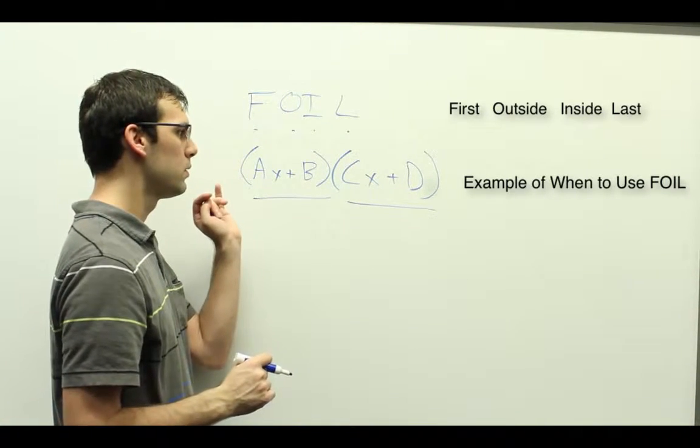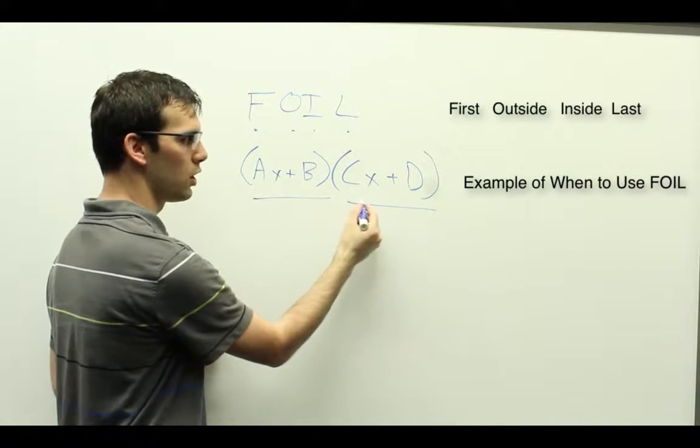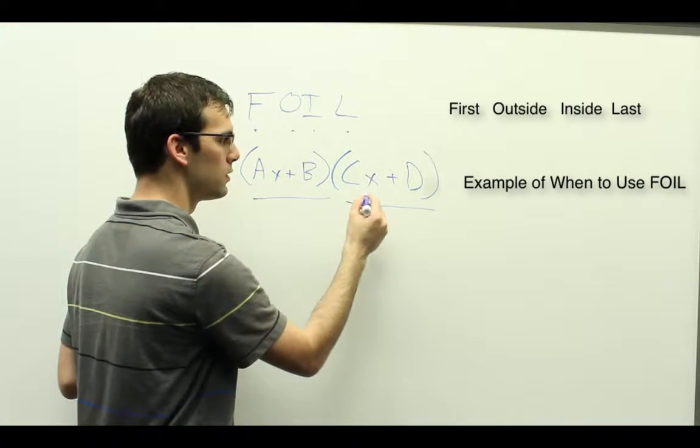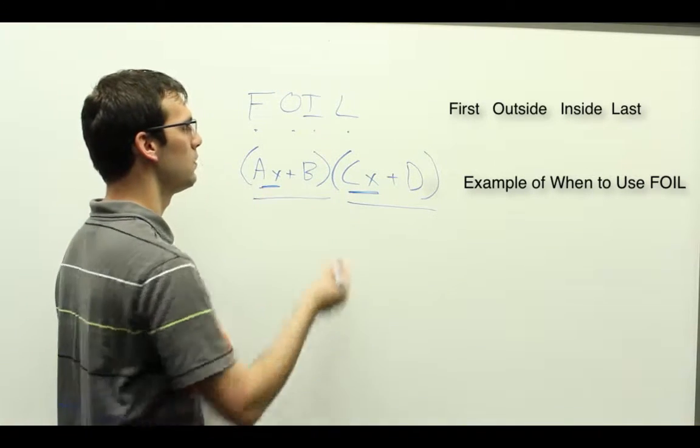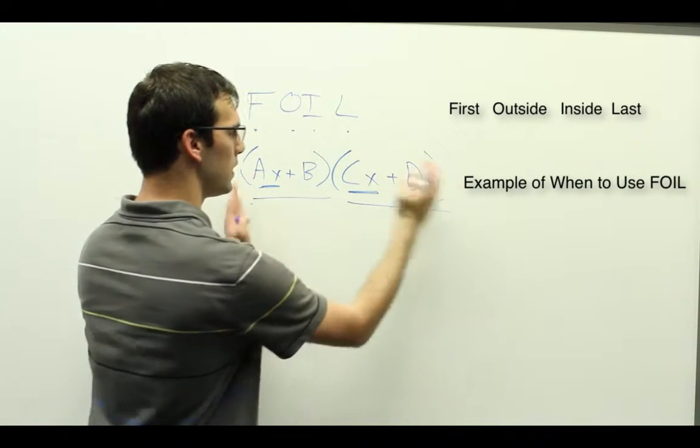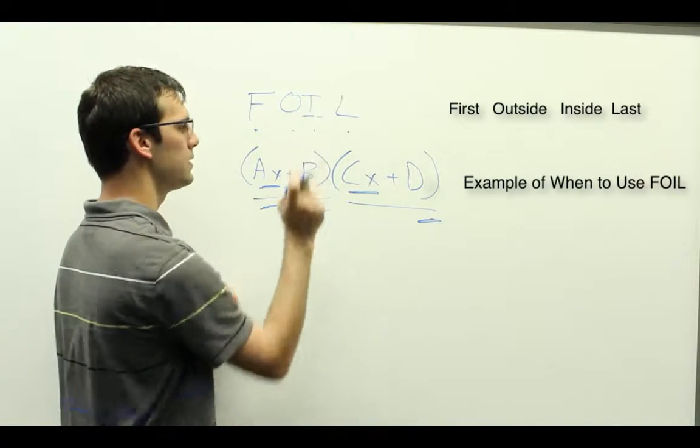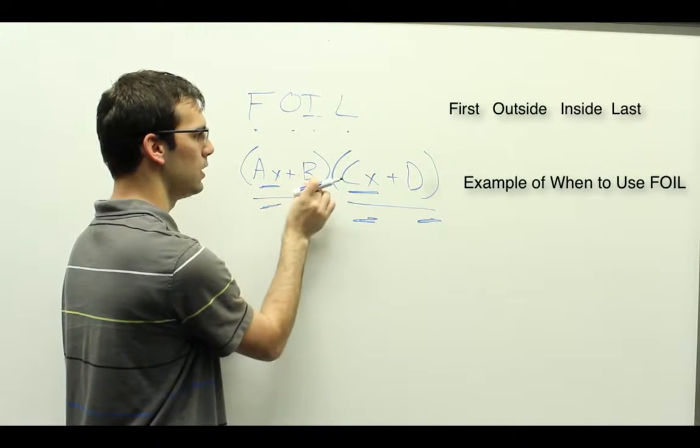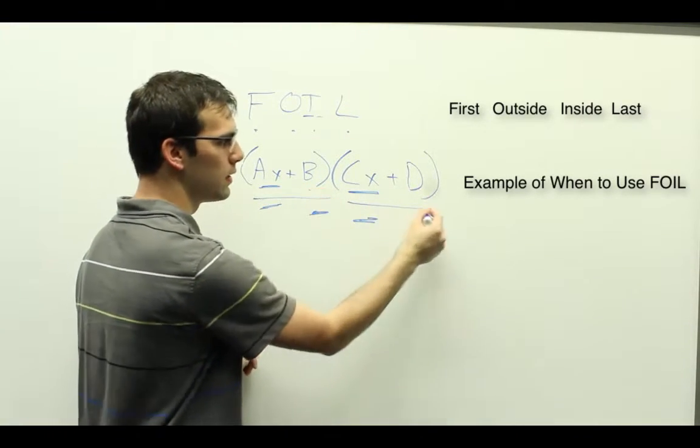And we can see that there is a first term for each of these two factors. So there's this CX and this AX would be the first term. Then there's an outside, which is the two things that are on the outside, which is D and AX. Inside, that would be B and CX, and last. So the last thing in each of the factors is B and then D.